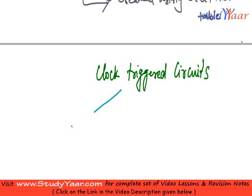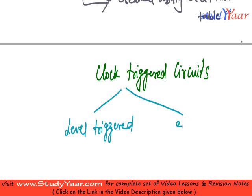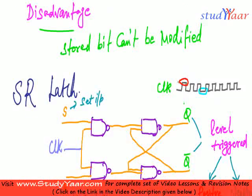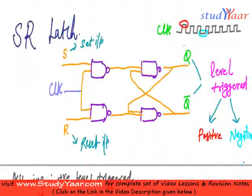They can be either level-triggered or edge-triggered. We have already seen what a level-triggered circuit is. A level-triggered circuit is enabled when your level is either high or low. When it is high, you call it a positive level-triggered circuit, and when it is low, you call it a negative level-triggered circuit.